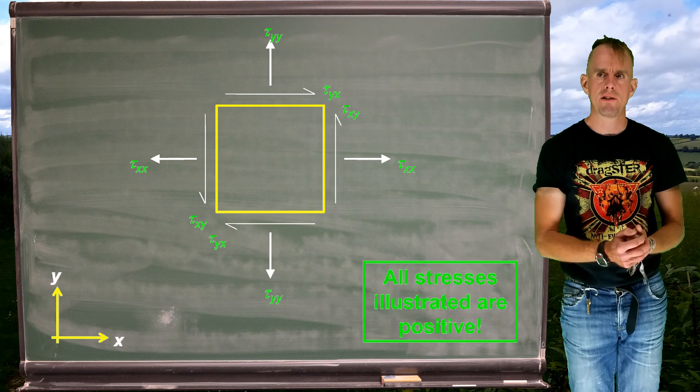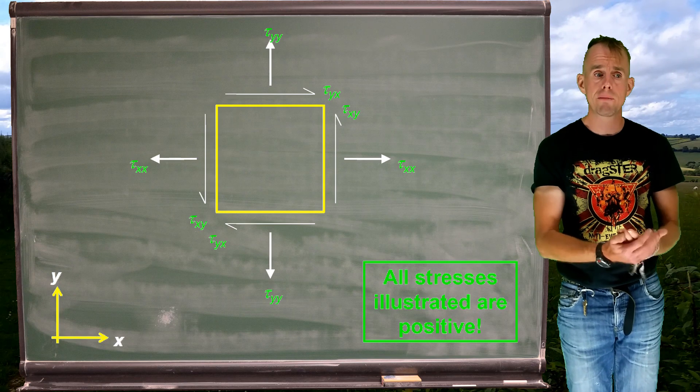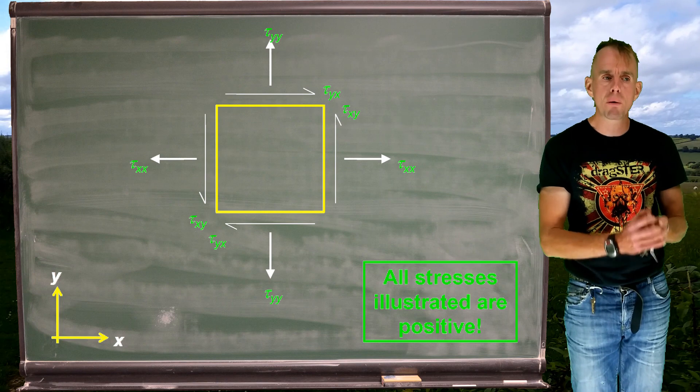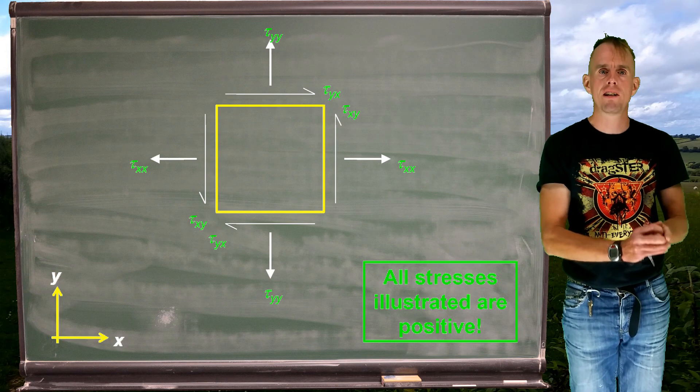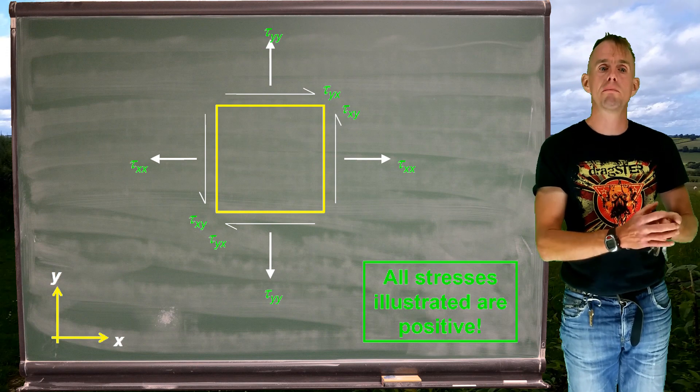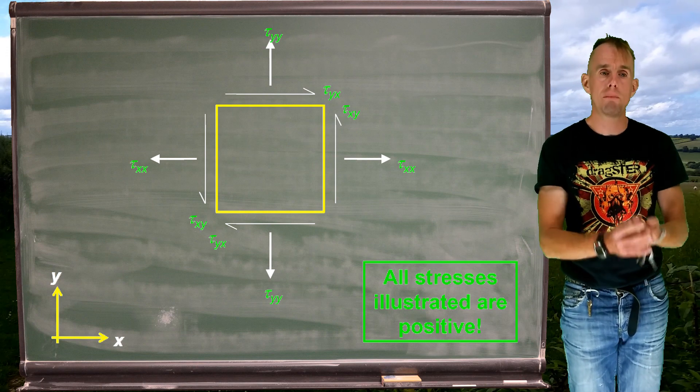OK, now we've got nine stresses in our stress tensor, which is a lot of information to deal with. And we mentioned right at the outset that an important point of the stress tensor is symmetry. And so let's have a look at the condition that must be obeyed for that tensor to become symmetric.